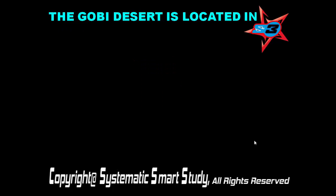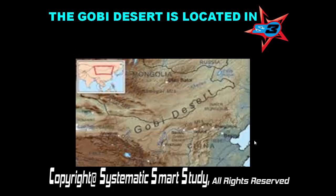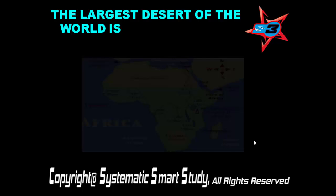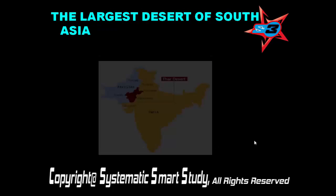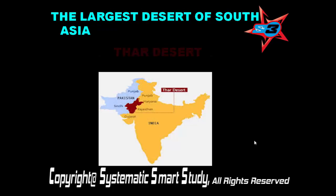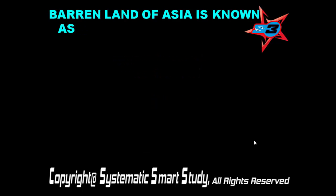The Gobi Desert is located in Mongolia. The largest desert of the world is Sahara. The largest desert of South Asia is the Thar Desert. The barren land of Asia is known as the Thar Desert.